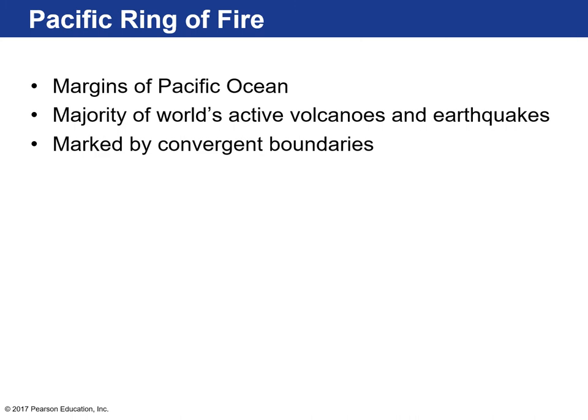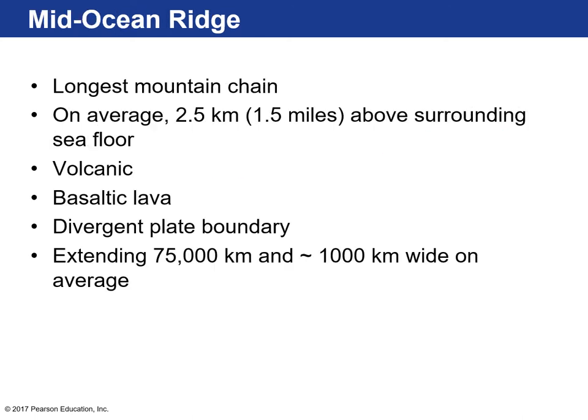The Pacific Ring of Fire surrounds the Pacific Ocean — the belts around the world with the most active volcanoes and largest earthquakes. They're all related to convergent plate boundaries, so plate tectonics helps explain that.